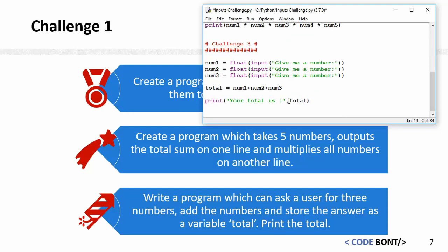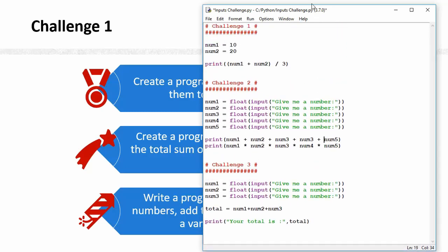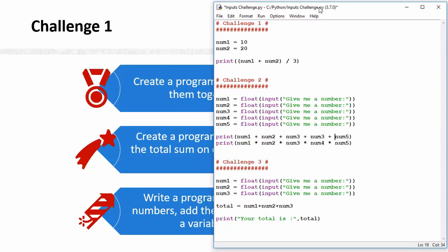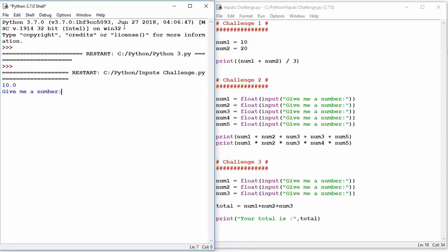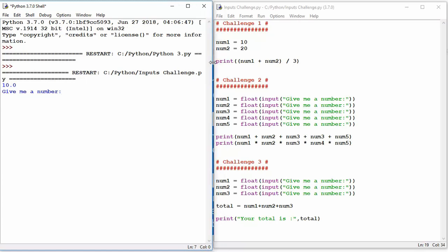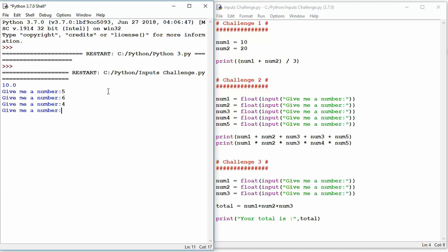Let's run this program now. It'll run in order, so it'll do Challenge 1 first. If I do run module, you get the shell back over here. Let's test this first program. It's asking give me a number, so if I do five as an example, then six, then four, five, six.